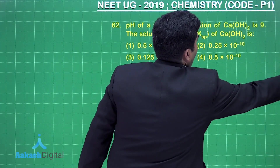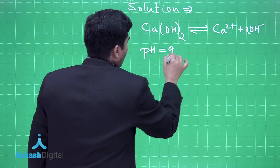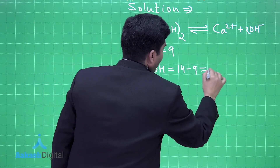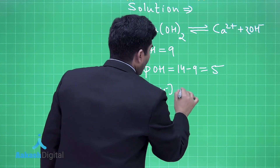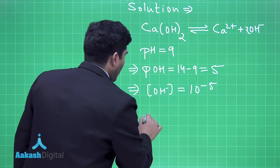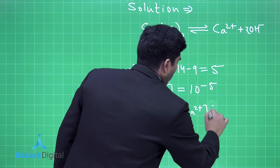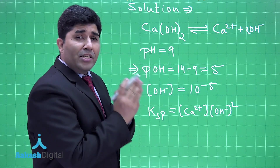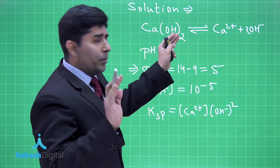It is given that pH is equal to 9, so pOH will be equal to 14 minus 9, which equals 5. Therefore, the OH⁻ ion concentration is 10 to the power minus 5. The KSP of calcium hydroxide equals [Ca²⁺][OH⁻]², and from the stoichiometry of the equation, the concentration of Ca²⁺ will be half the concentration of OH⁻.